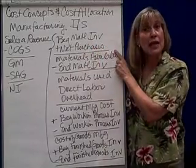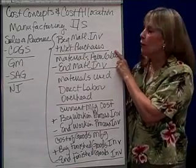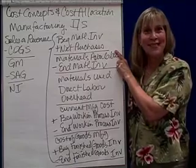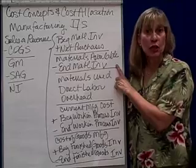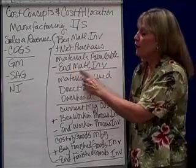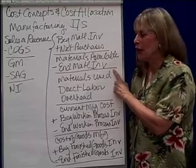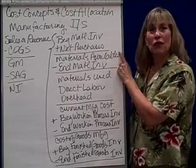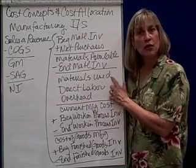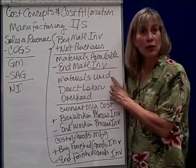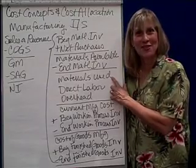To that we add net purchases — you went shopping during the period and bought groceries that you put in those cabinets or the refrigerator. That gives you the materials available for use. If you subtract what's still in your refrigerator or cabinets at the end of the period, the difference between what's available and what you didn't use is what you used — the materials taken out to make a product or provide a service.